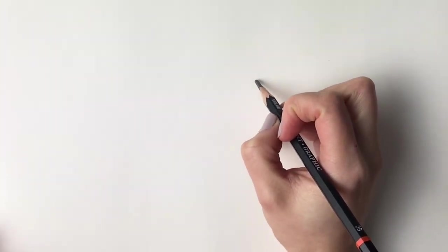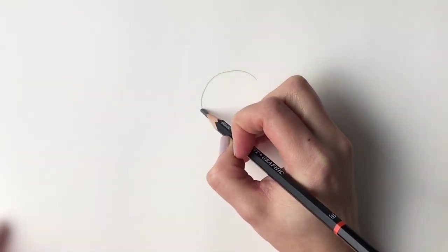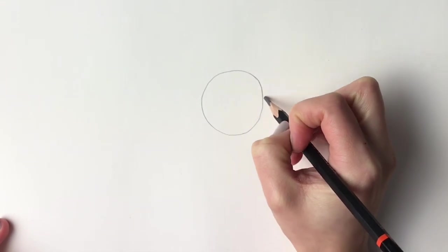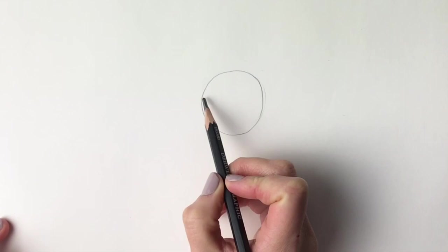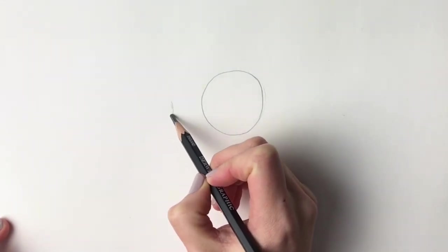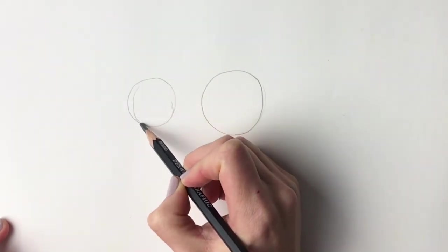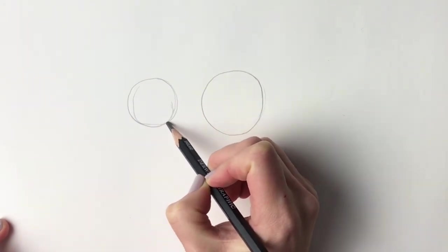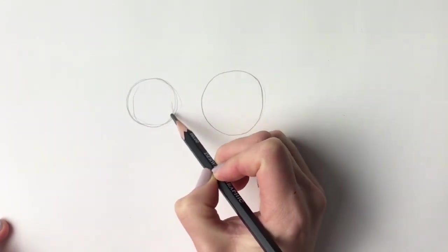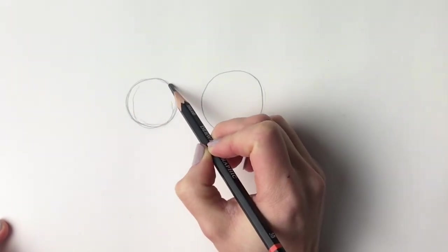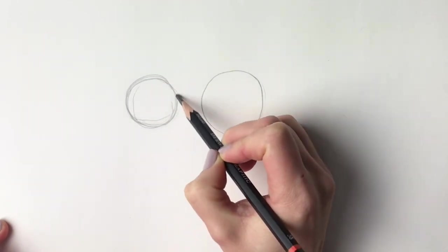We're going to start off easily with a big circle just here. Doesn't have to be perfect, just a rough circle or you can draw around something if you like. Then we're going to draw a slightly smaller circle just to the left of this circle. You can see that my circles aren't very perfect, but just do what you can. We just need a rough guideline. We're going to rub these out so don't press too hard. There we go, we've got our big circle and our slightly smaller circle.